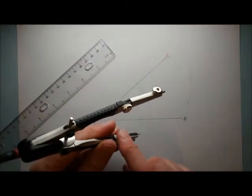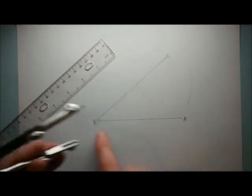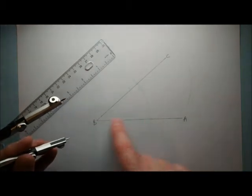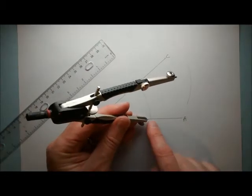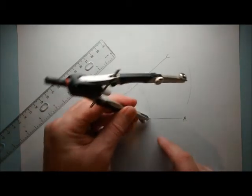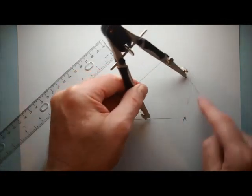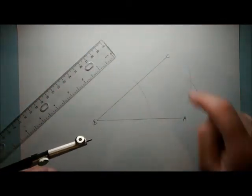Same thing - keep the compasses at the same setting. Place the pointy end where that arc cut AB, and draw an arc here so it intersects the previous arc.